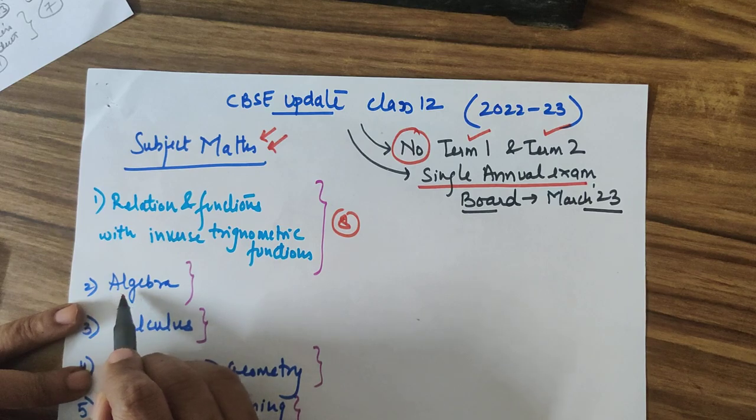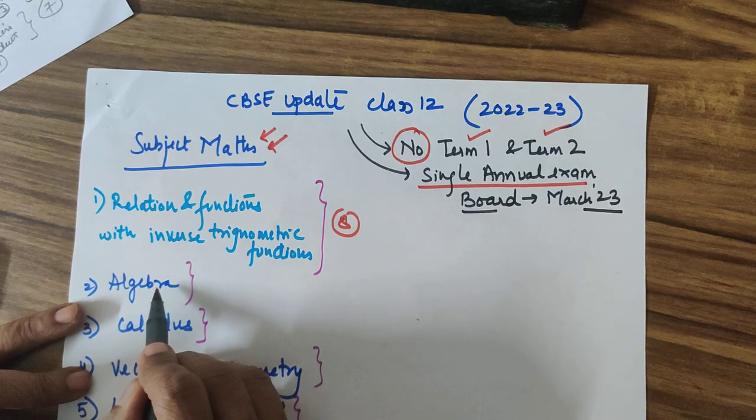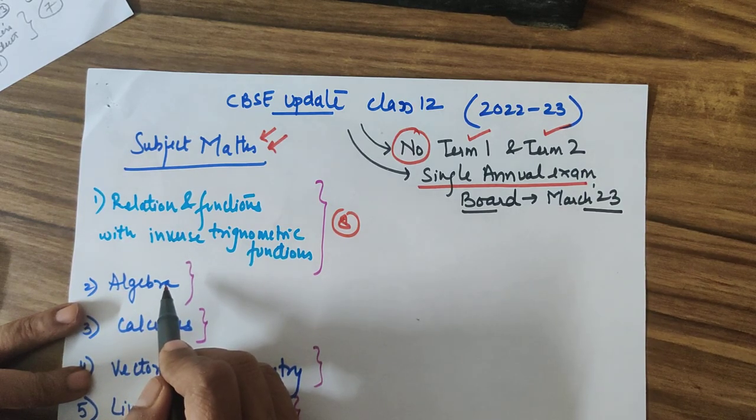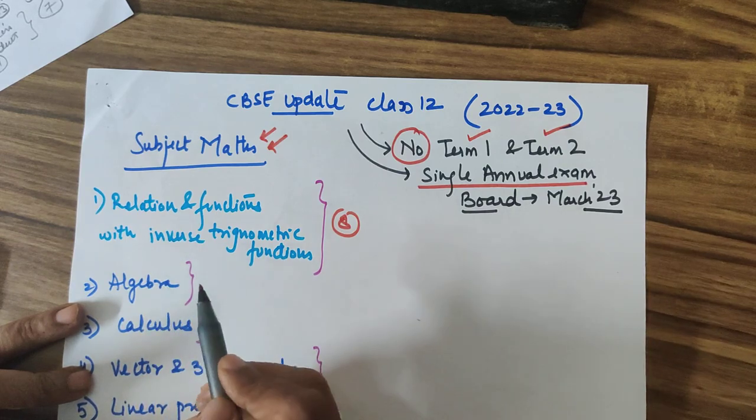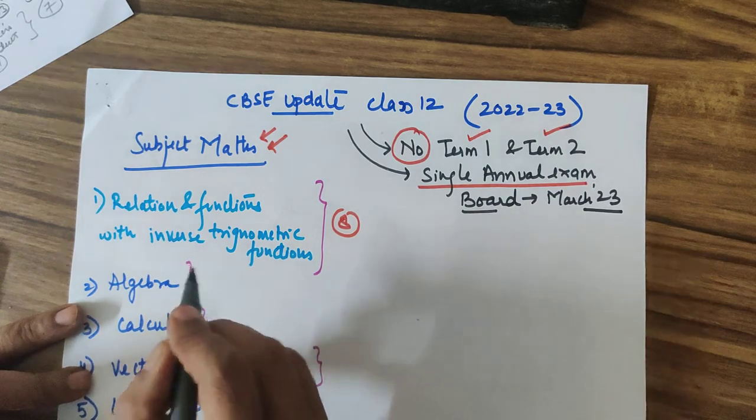The second section is our algebra which has got matrices, determinants, continuity, integrals, differential equations, etc. This has a weightage of 10 marks.